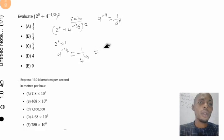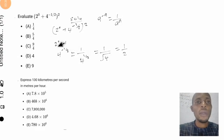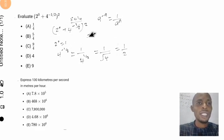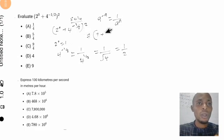So the power of one-half is the same as square root. That means we take the square root of 4, giving us one over the square root of 4. The square root of 4 is 2, so this part equals one-half. Now substituting back: we have 2 to the power of zero, which is 1, plus 4 to the power of negative one-half, which is one-half — all still inside the bracket raised to the power of two.